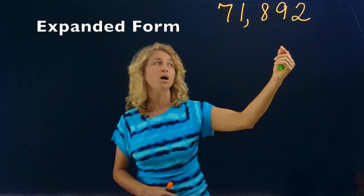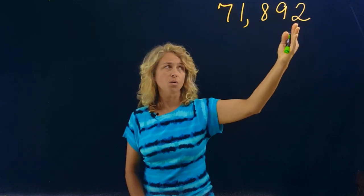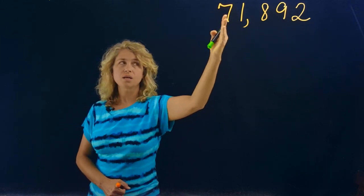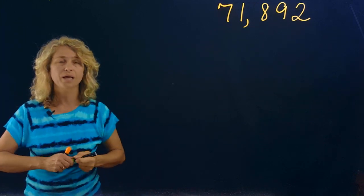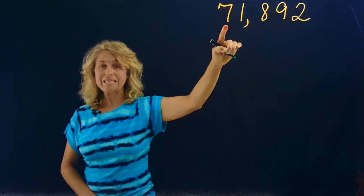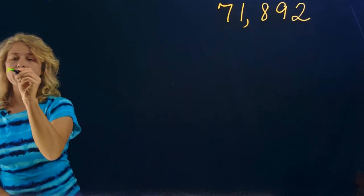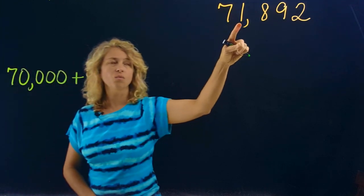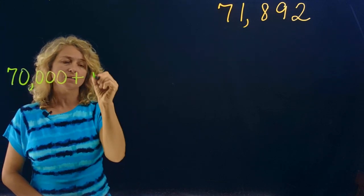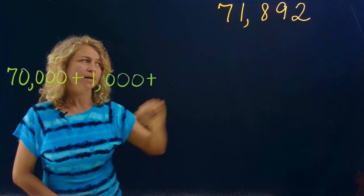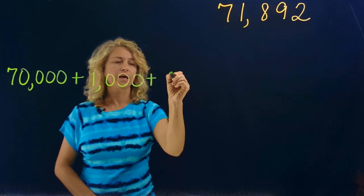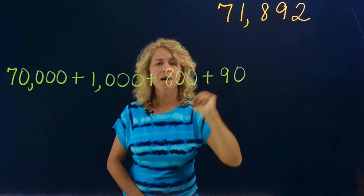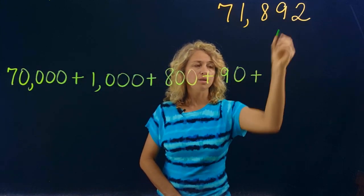You still have to know the place value of each digit: ones, tens, hundreds, thousands, ten thousands. Starting with the largest digit, seven is in the ten thousands place and is worth seventy thousand. Then one in the thousands place is one thousand, plus eight in the hundreds place is eight hundred, plus nine in the tens place is ninety.